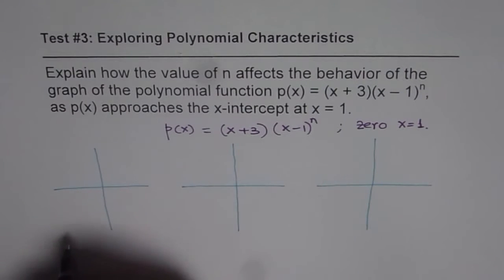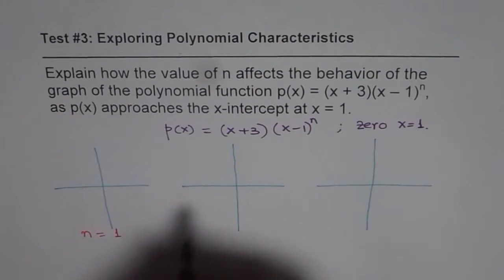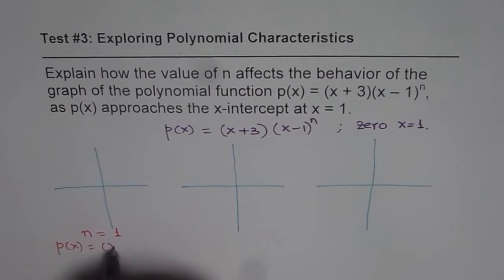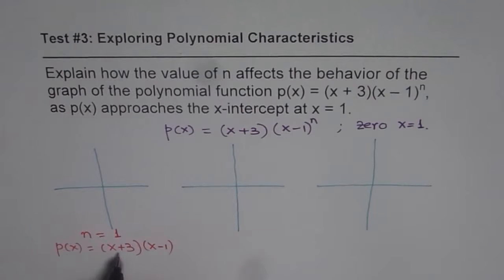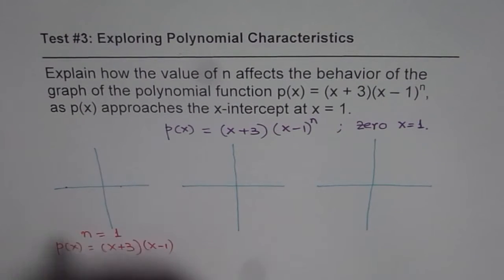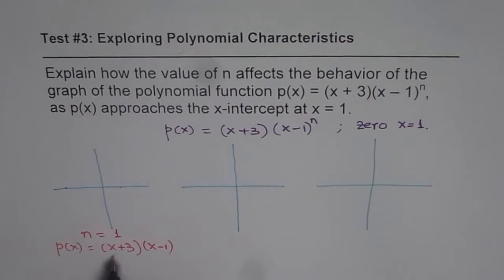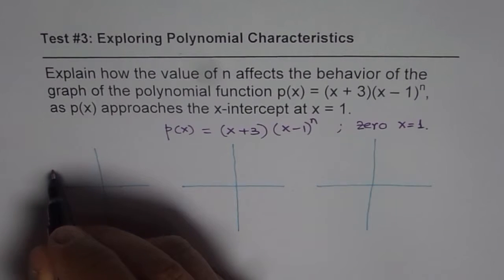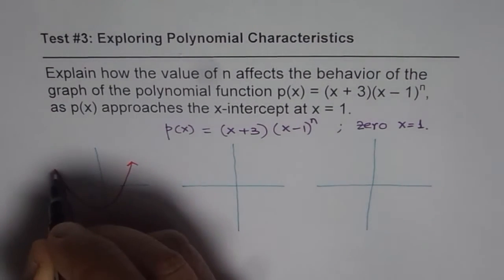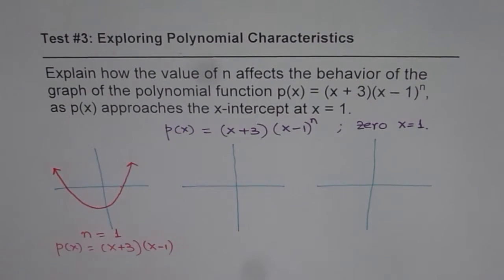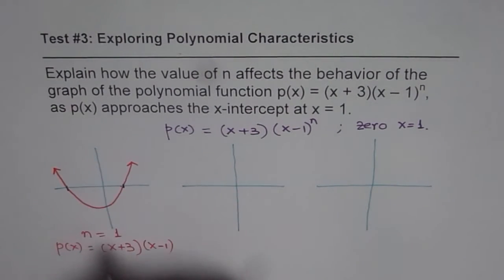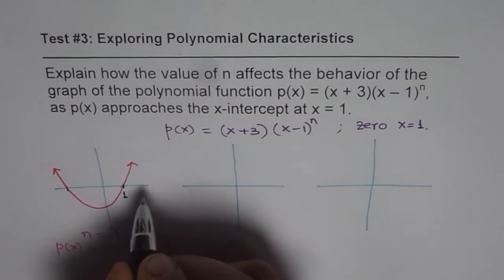If n equals to 1, the polynomial will be x plus 3 times x minus 1. That means we have two x-intercepts: the first one at minus 3 and the other at plus 1. Since the leading coefficient is positive, it behaves like a parabola opening upwards. We are only describing the behavior at the x-intercept x equals to 1.